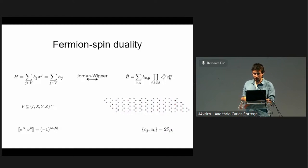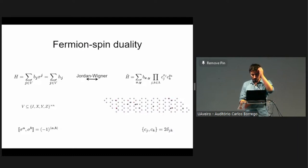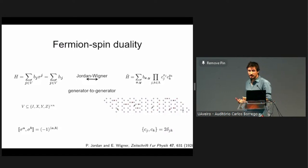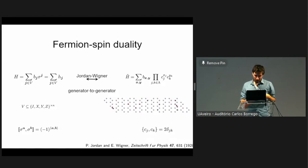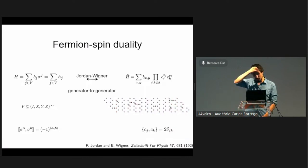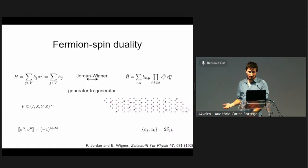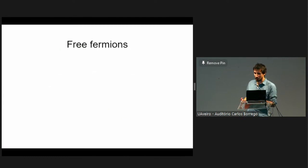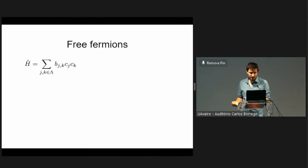The crucial thing about Jordan-Wigner, and what people thought for a long time was the only possibility, is that these mappings are generator-to-generator: each Pauli string is mapped to a product of Paulis. You might wonder why you'd bother mapping from spins to fermions — if you have a fermionic system and want to simulate it on a quantum computer, mapping to spins makes sense, but why go the other way? Well, in the magical case that your fermionic Hamiltonian is bilinear — only quadratic terms — then this is a free fermionic system.